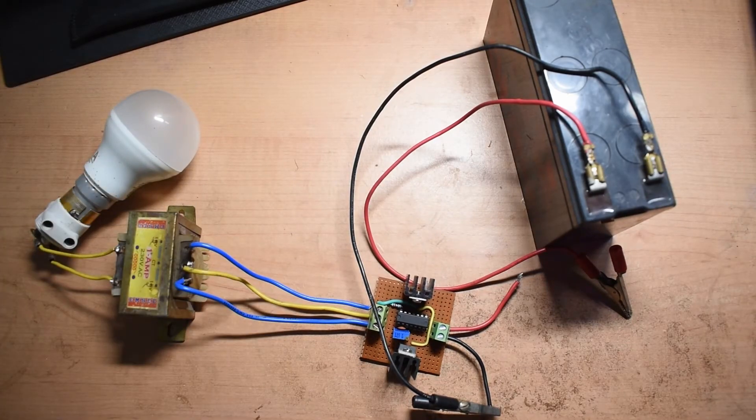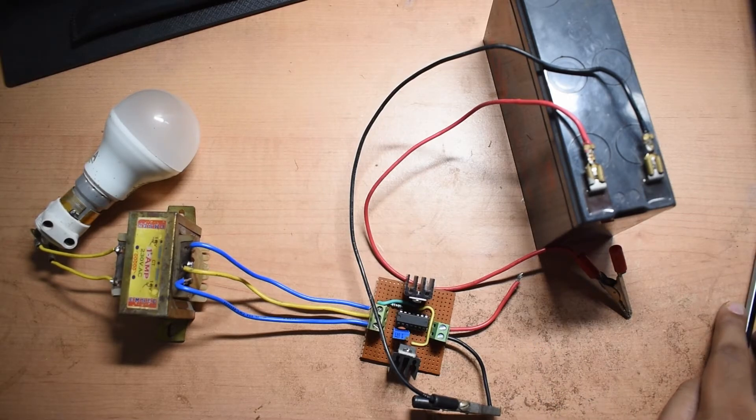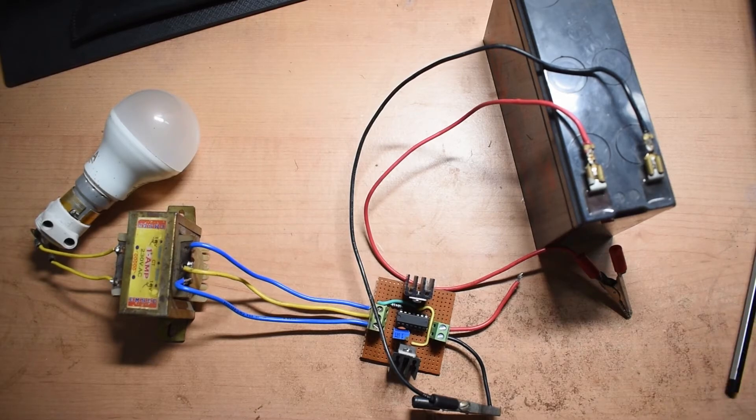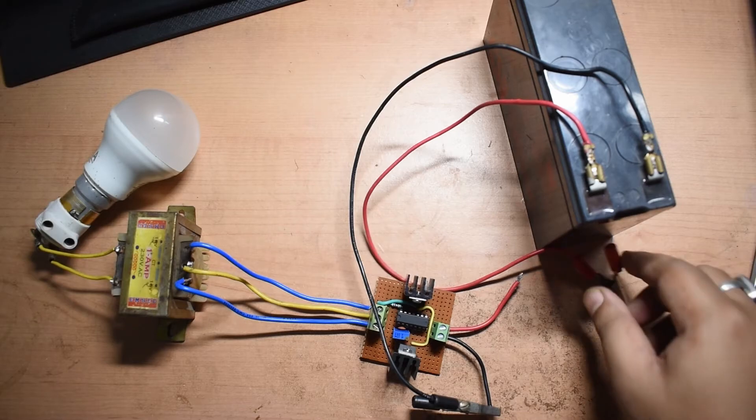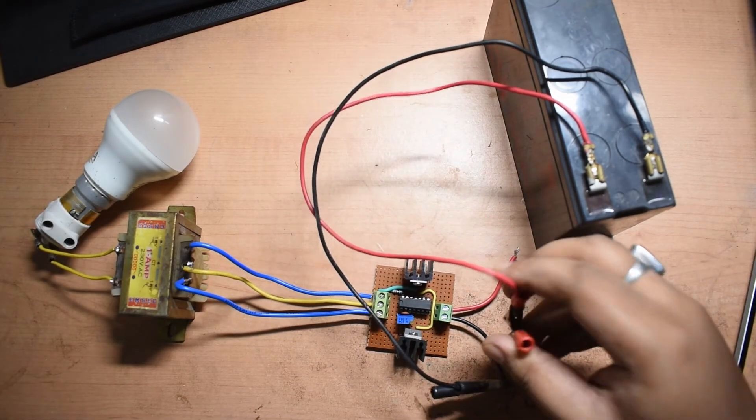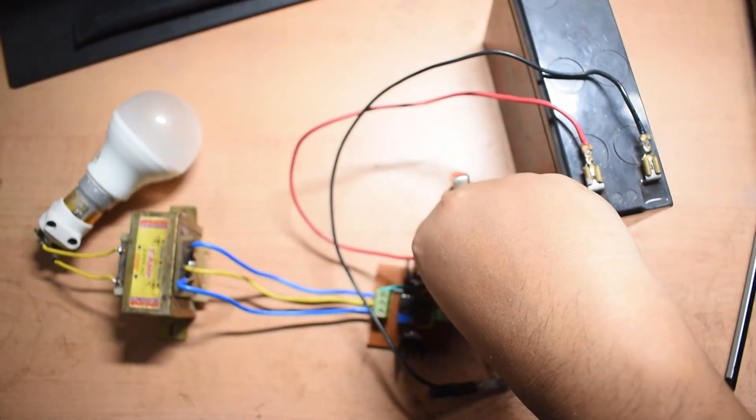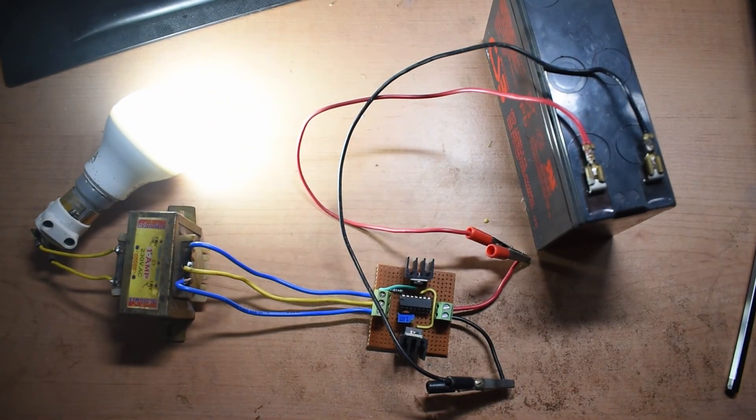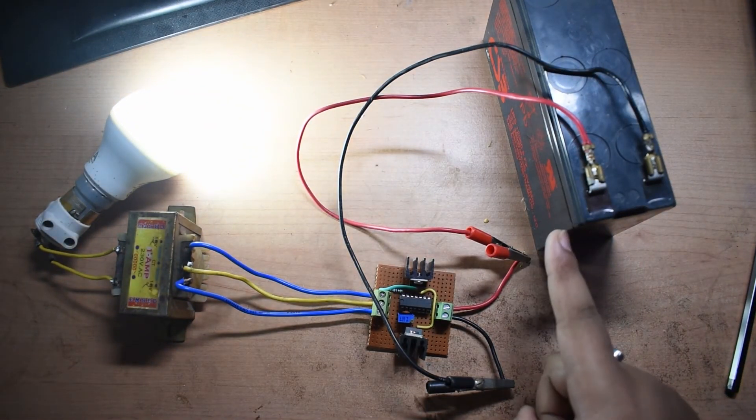So now I have connected everything to the circuit except the positive terminal of the battery which I will be connecting in a moment to show the output of the transformer. Once I connect it the light bulb will glow at its full brightness as you can see here and obviously it's running from a 12 volt battery.